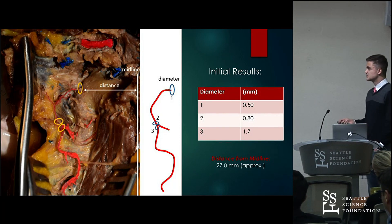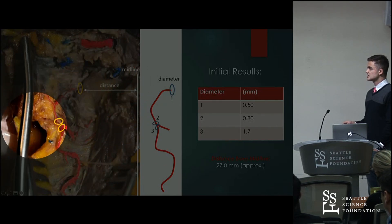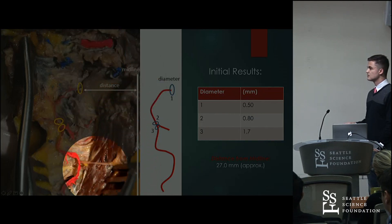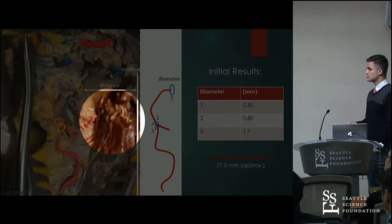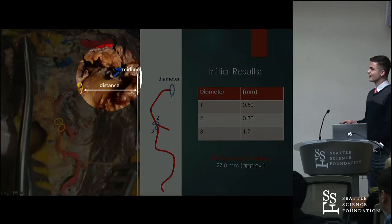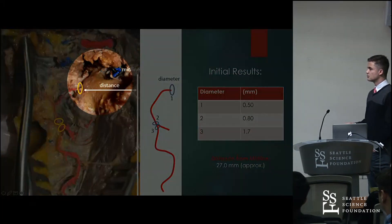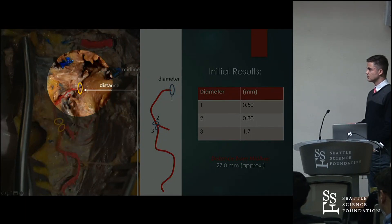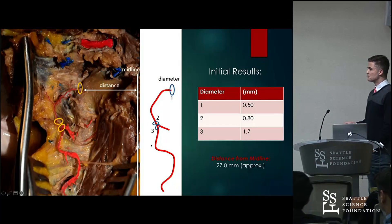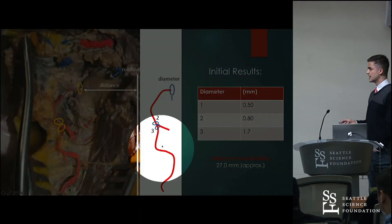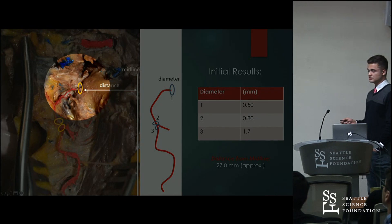Let's talk about the study itself and our results. For reference, this is a dissection of the posterior neck. Left is lateral in this case and right is midline, so this is the left side of the posterior neck. A couple of important structures to keep in mind: this muscle here is the semispinalis capitis, and this is the vertebral artery as it moves laterally to medially. I've put in a couple of circles here to show the different points at which we are measuring the diameter of the deep cervical artery, numbered as diameter 1, diameter 2, and diameter 3. We also measured the distance from the midline to the point at which the deep cervical artery enters the nutrient foramina of C2.